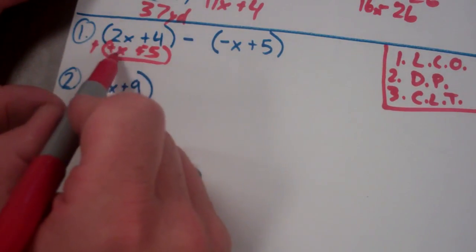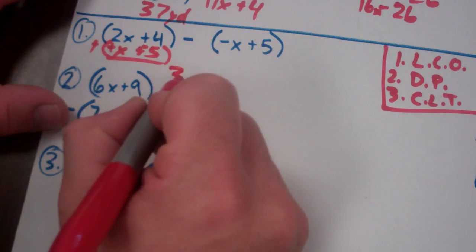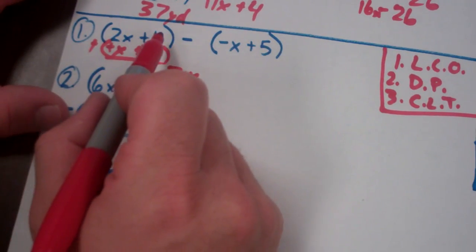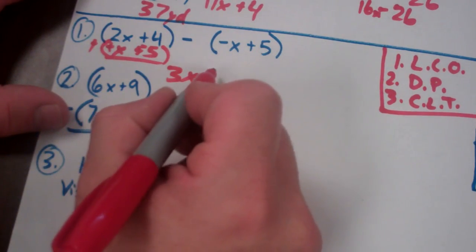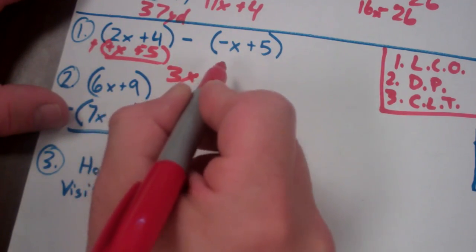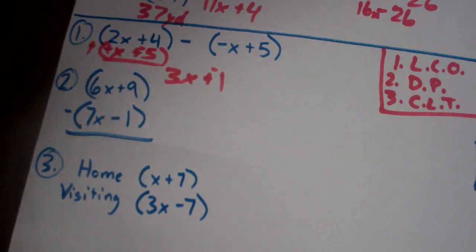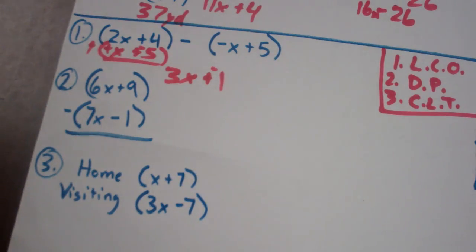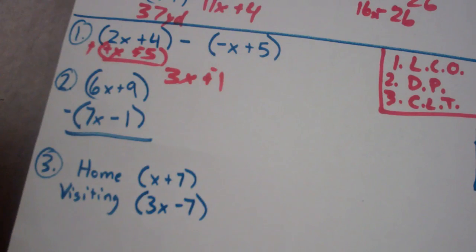So now I have a 2x plus x, which is 3x. And I have a 4 plus a negative 5, which is a negative 1. I could write it like that. Or, of course, plus a negative 1. Either one of those would be an acceptable way to write that. 3x minus 1 or 3x plus negative 1.